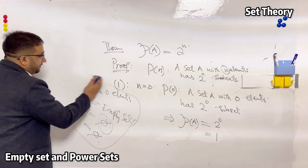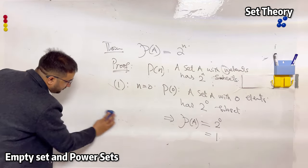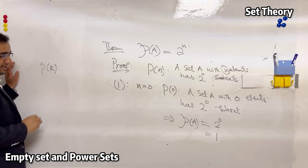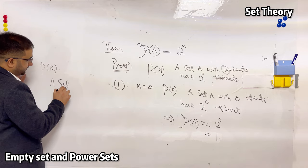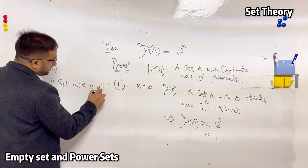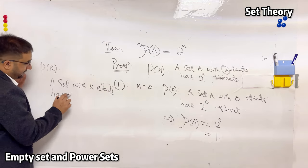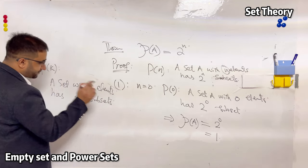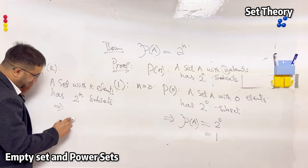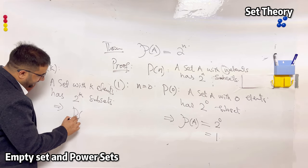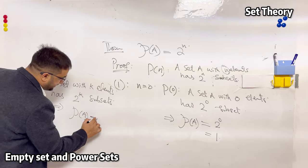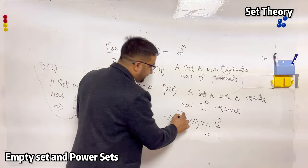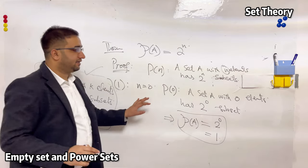Having proved P(0), we are eligible to collect the inductive gift: assume P(k) is true — that is, a set A with k elements has 2 raised to the power k subsets. This means the power set of A, when A has k elements, equals 2^k. We will use this gift to prove the next step.